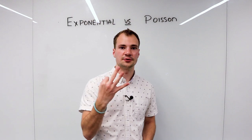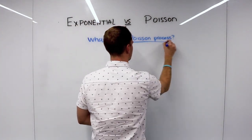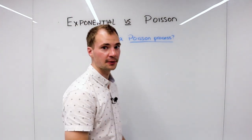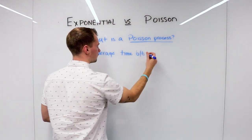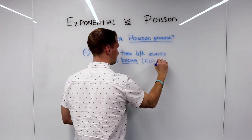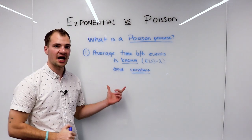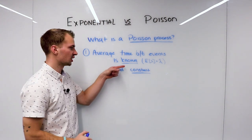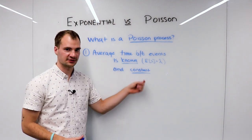What does that mean? There's kind of three main factors that go into something being a Poisson process. Let's look at them. This first one says that the average time between events is not only known, but it's also constant. It's not changing throughout the day or throughout the experiment.